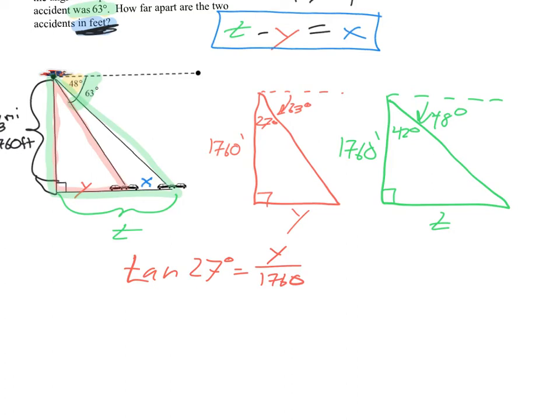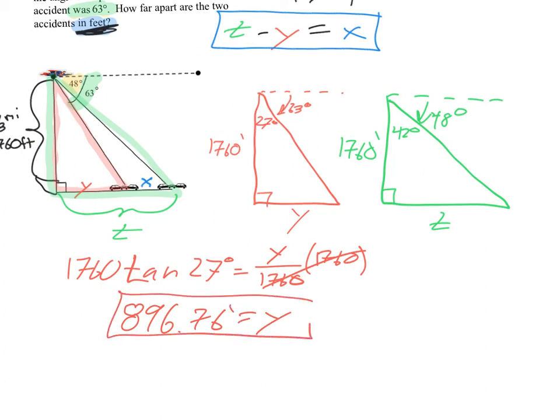All right. Well, I'm just trying to solve for y. So I need to get that all by itself. In order to do that, I need to get rid of this 1,760, which is dividing y. So let's just go ahead and multiply both sides by 1,760. And now I know what y is. Now that I have y all by itself, I can go ahead and plug it in my calculator. Remember to make sure that your calculator is in degree mode. And when you plug it in, you should get something like this, 896.76. I'm just going to round to two decimals for now. And again, that's feet, because all of our dimensions are in feet. So now we know what y is.